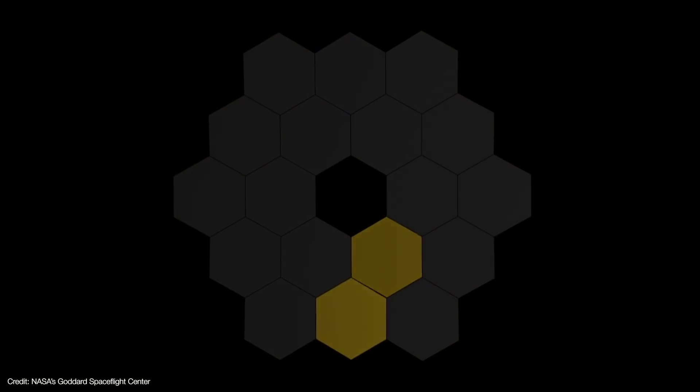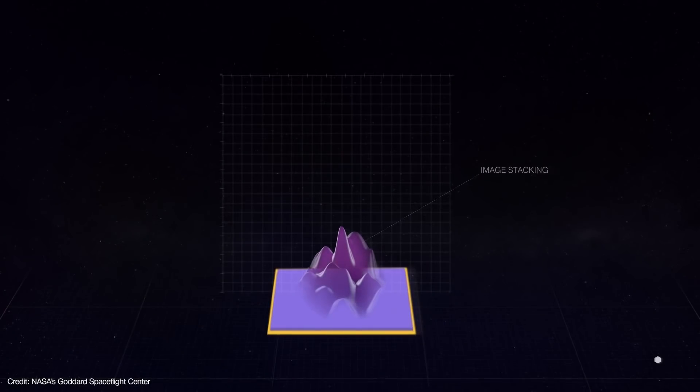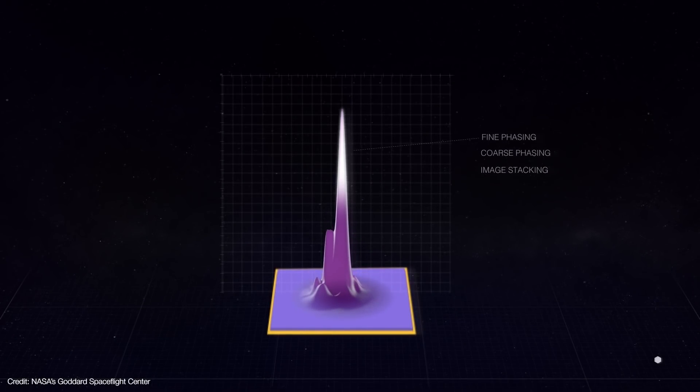The commands are then uploaded to the telescope, which makes the prescribed adjustment, and the process is repeated. With each adjustment, the star gets a tiny bit sharper. The sharper the image gets, the smaller the changes become.